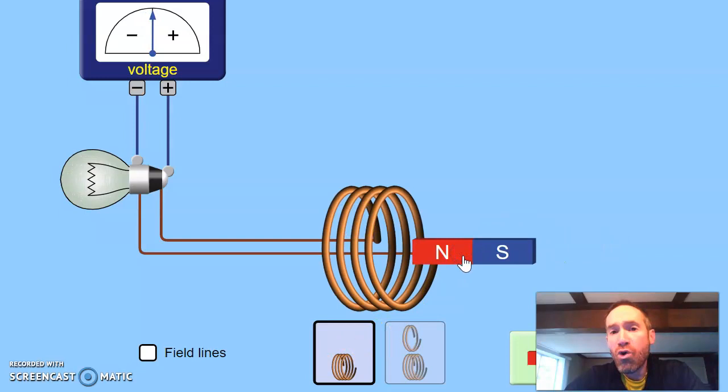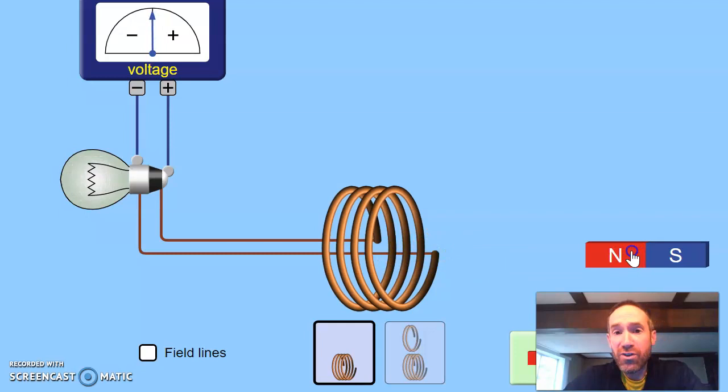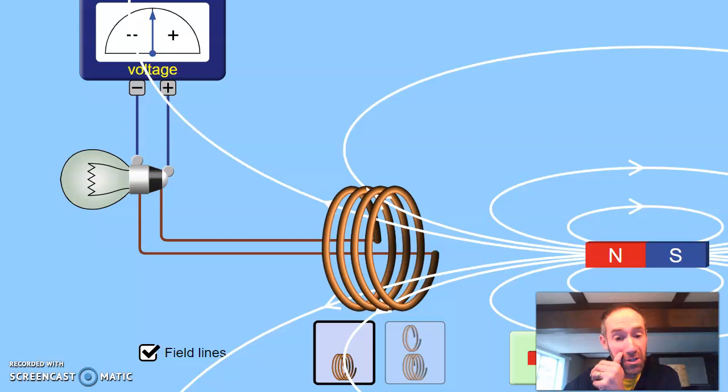Right now, a certain amount of those field lines are going through this coil, and some of them aren't. If I move it closer, now more of those field lines went through the coil and less of them missed. And if I move it farther away, now more and more of them are missing as I move it away, and less and less of them are hitting.